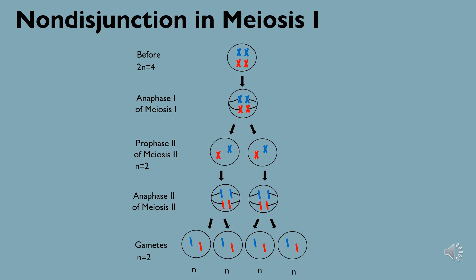As mentioned previously, chromosomal nondisjunctions can also occur in meiosis during either anaphase 1 or anaphase 2, and we see varying effects depending on when a nondisjunction event occurs. The overall goal of meiosis is for diploid cells to undergo two stages of division to ultimately produce four haploid gamete daughter cells with half as many chromosomes as the parent cell.